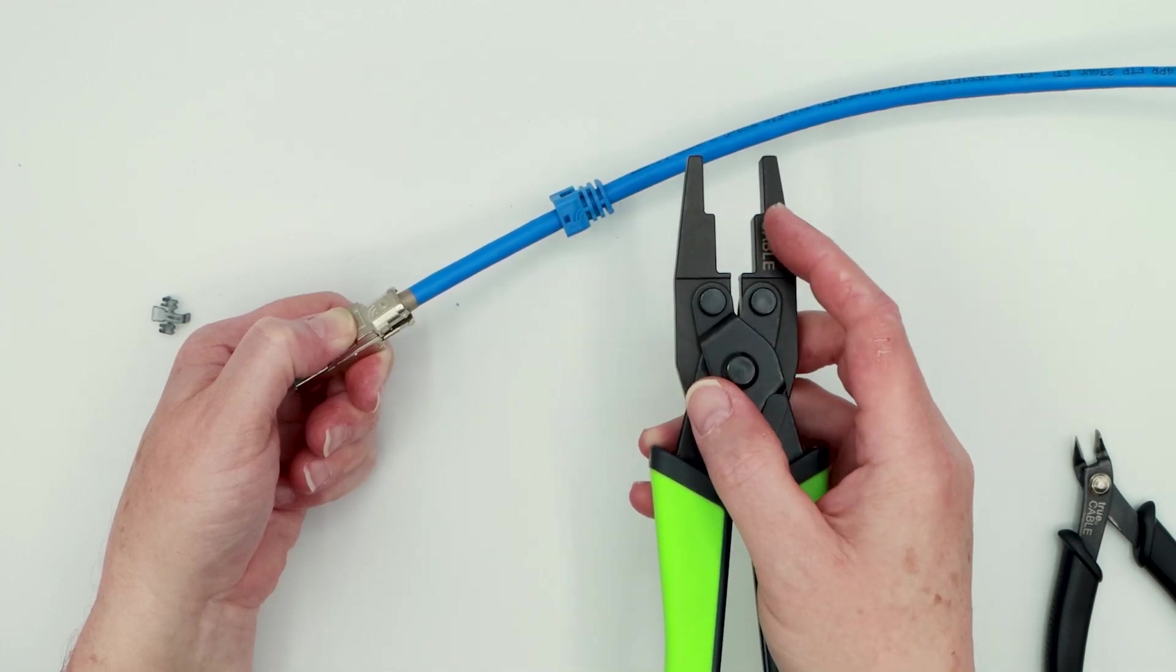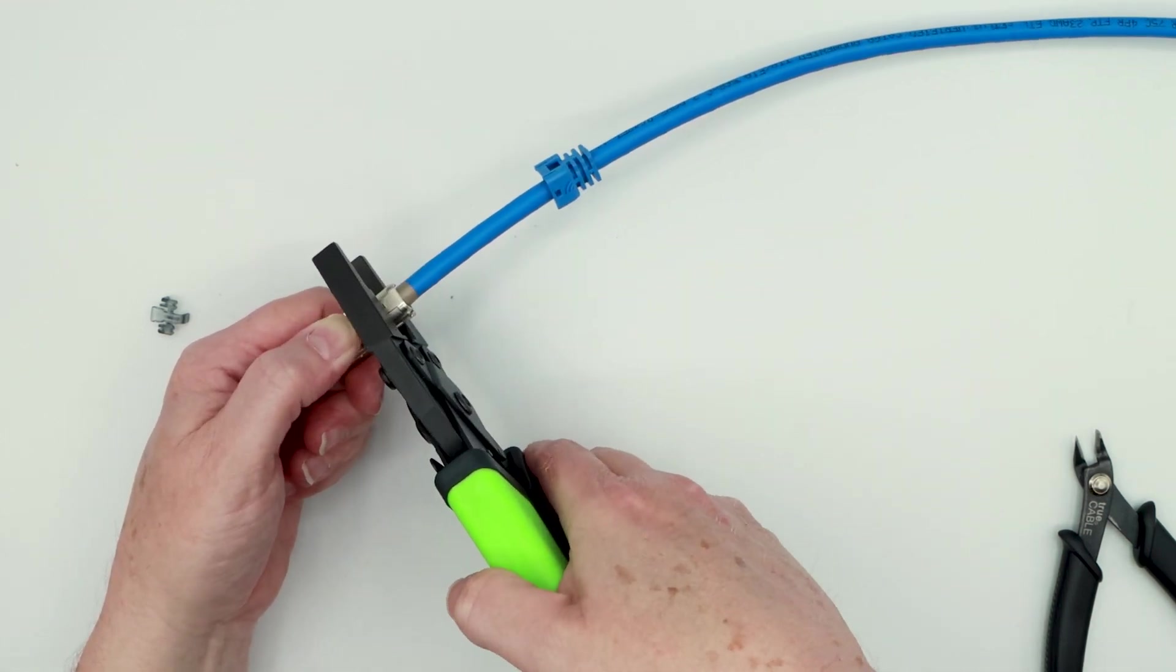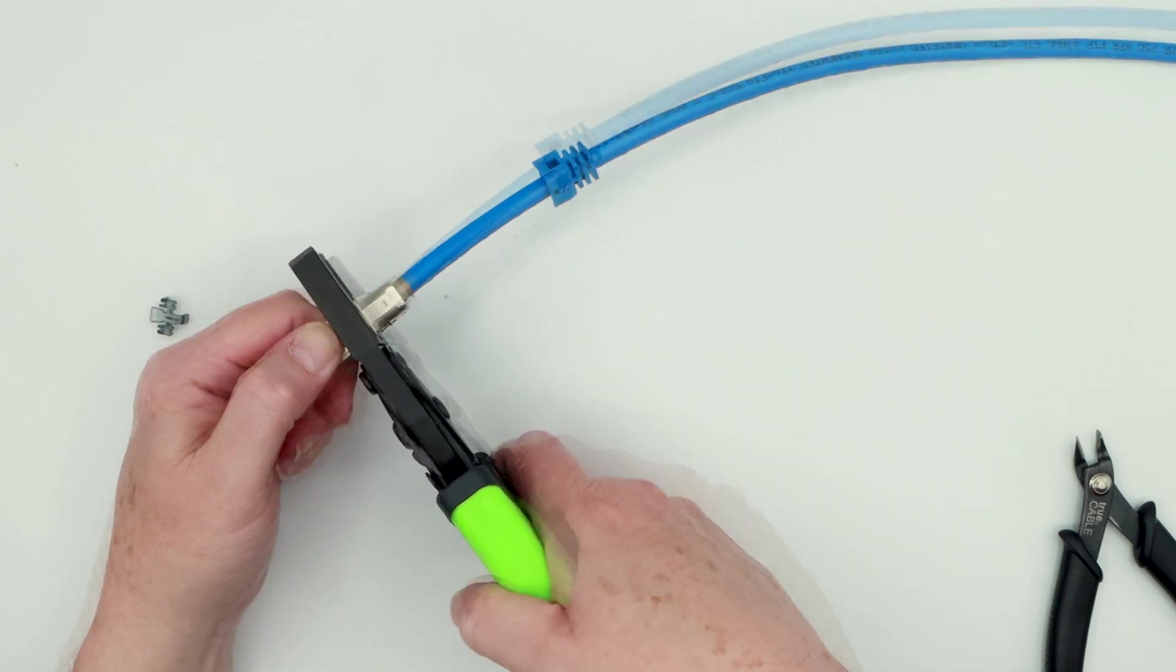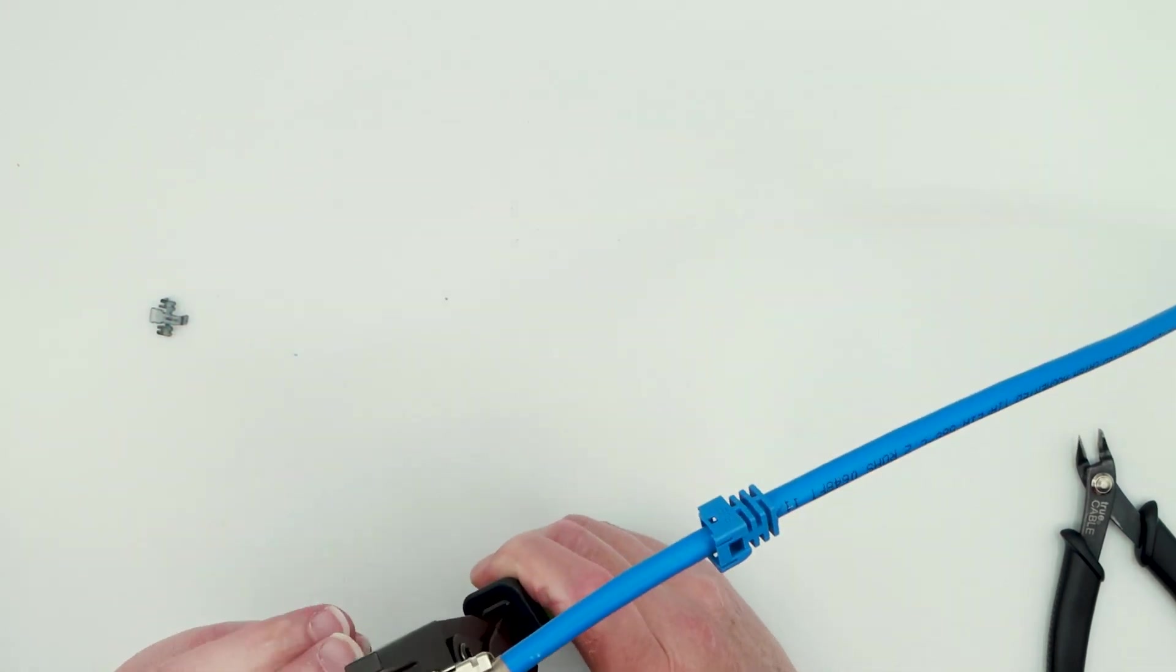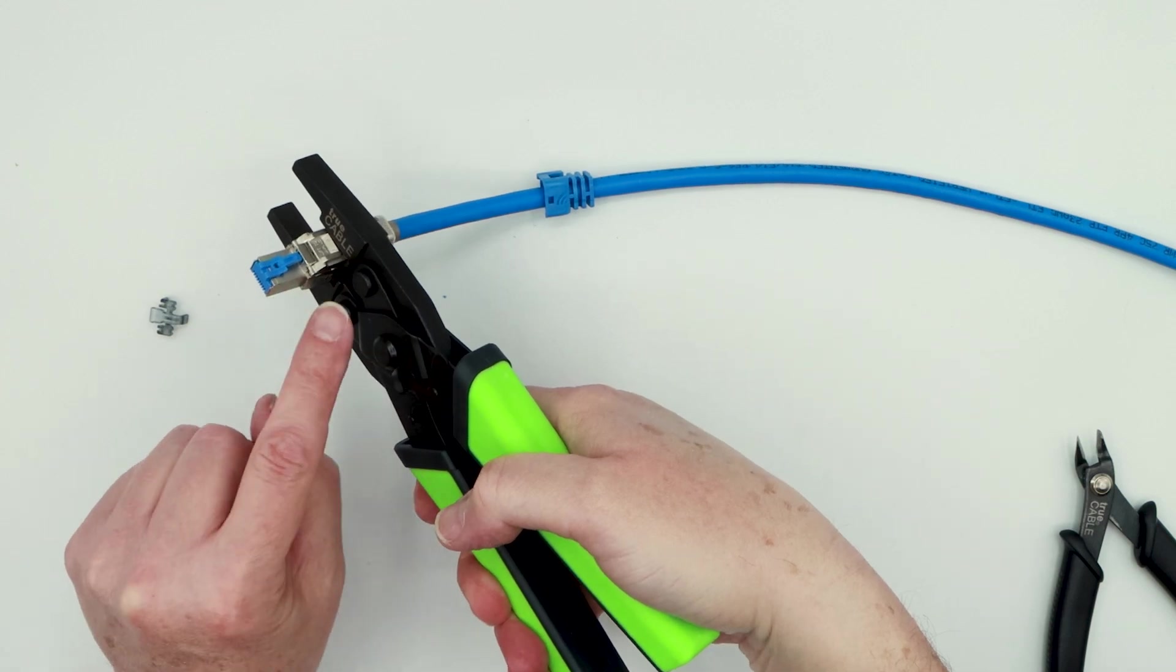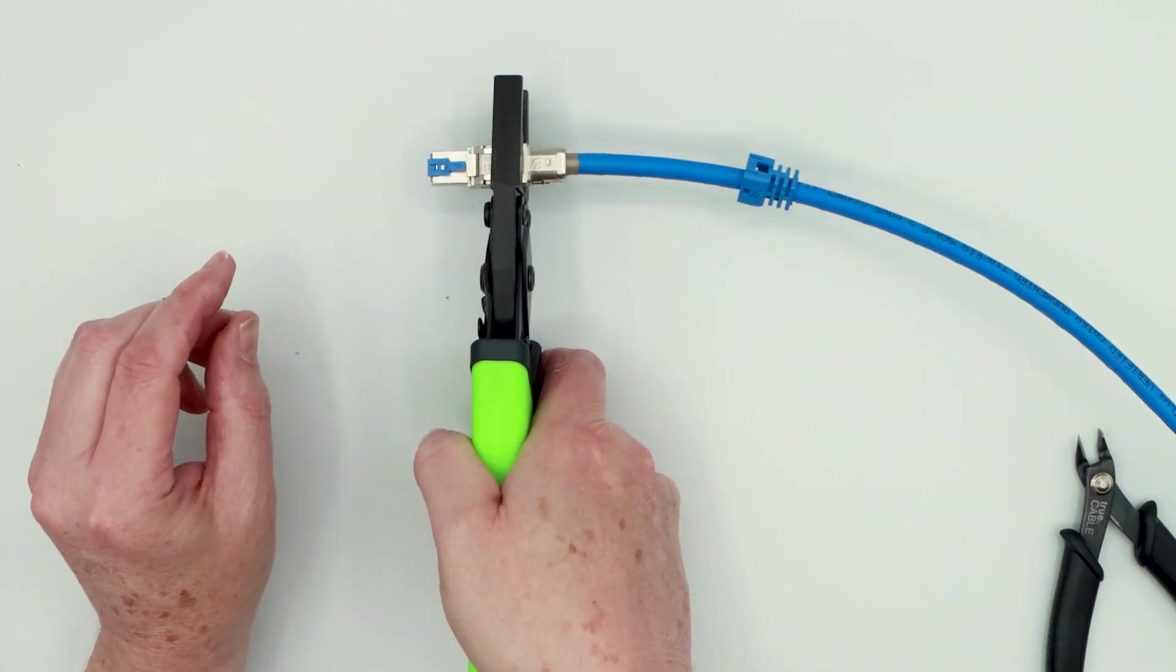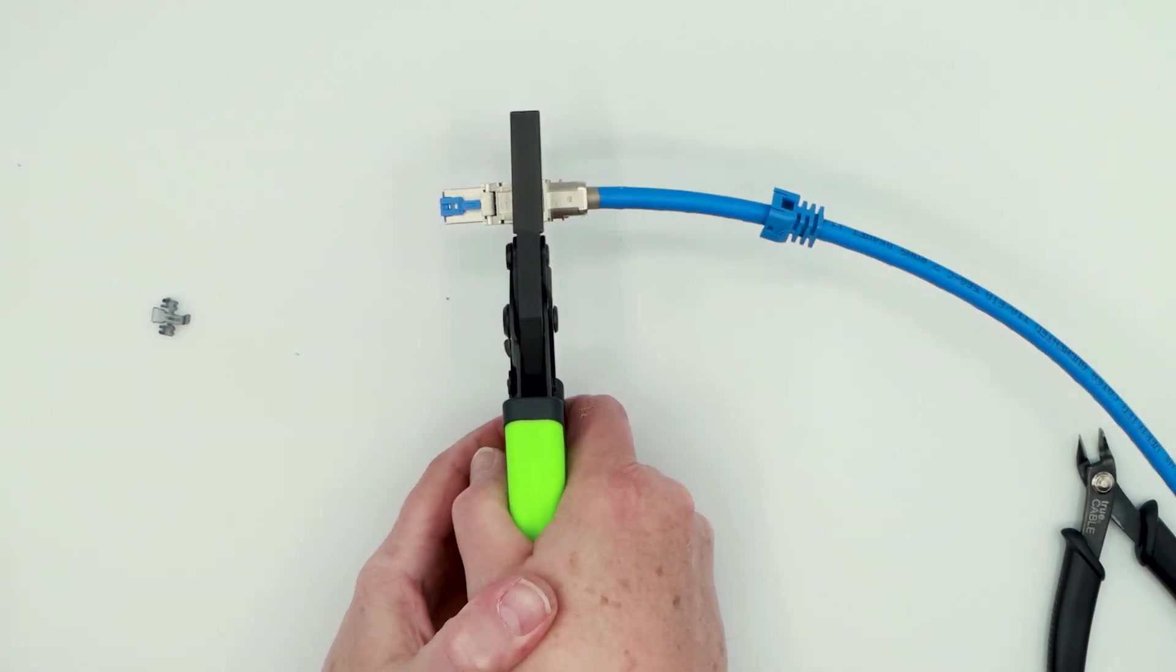The outside is for our tool-less keystone jacks. The inside is for our field termination plugs. So we're going to open that up, and then what you're going to do is you're going to want to place the TrueCable logo on the field termination plug basically right at the jaws of this parallel crimper, just like this, and more or less in the center of that field termination plug, and then you close it, just like that.